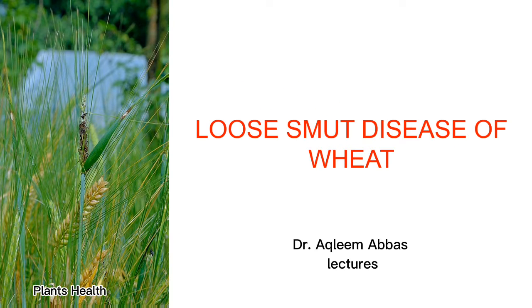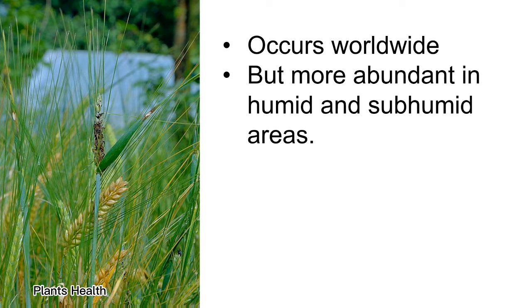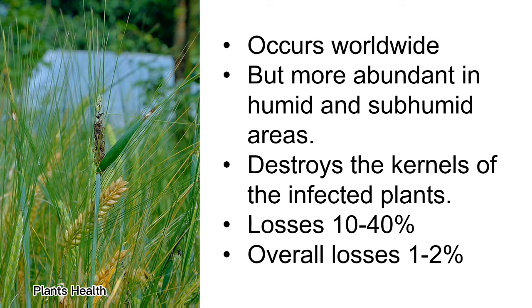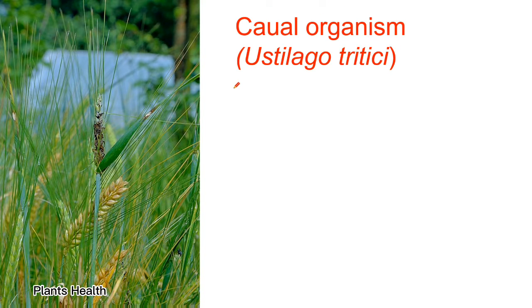Hello everyone. Today we will talk about loose smut disease of wheat. Loose smut disease occurs worldwide, but is more abundant in humid and sub-humid areas. It destroys the kernels of infected plants, causing losses of 10 to 40% in severe cases, but overall losses are 1 to 2%. Luce Simard in 1953 reported losses of over 50 million in India, where average incidence was 3%.